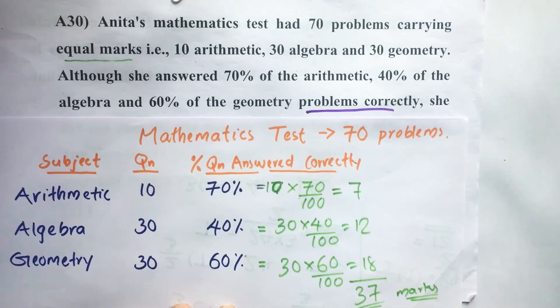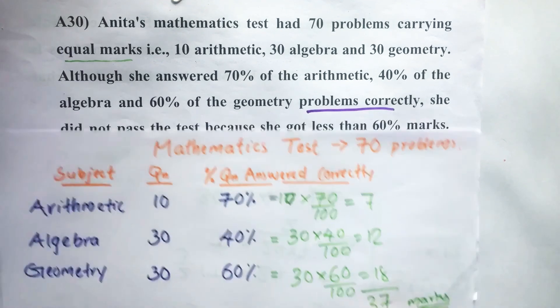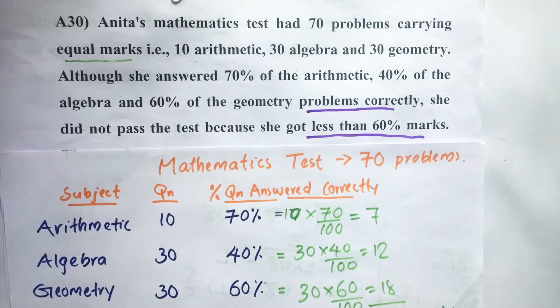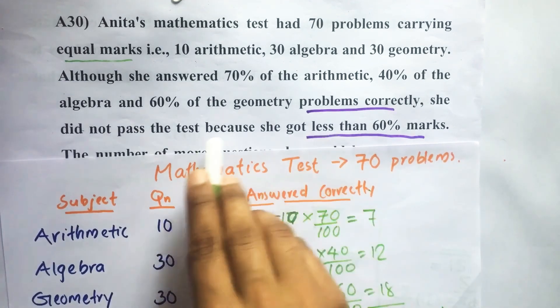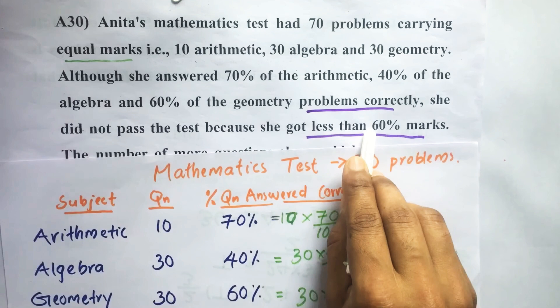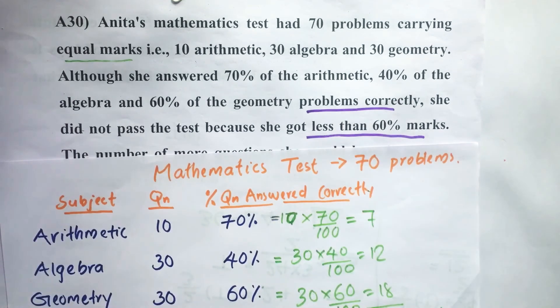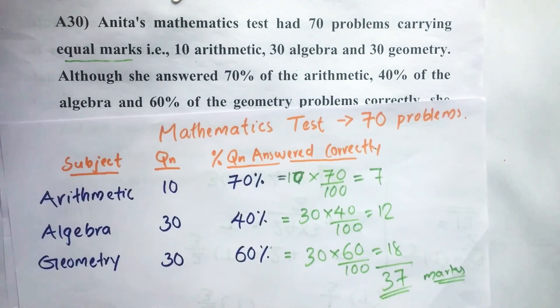Each question carries one mark, so 37 questions means 37 marks. But this 37 marks is not enough. She should get at least 60% marks to pass this test.